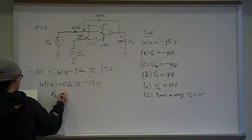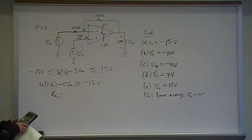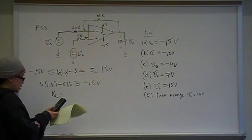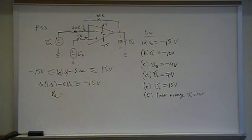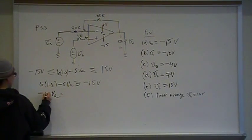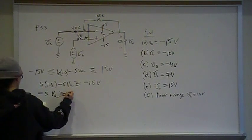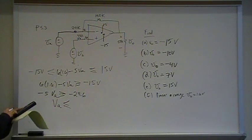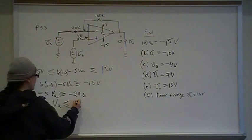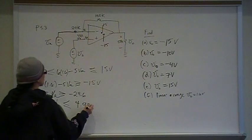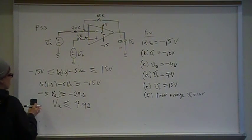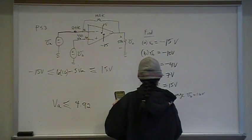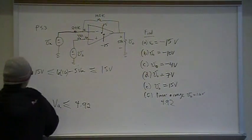Bringing that to the other side and solving for VA, that gives me negative 15 minus 6 times 1.6, which is negative 24.6 divided by negative 5, changes the arrow. So 24.6 divided by 5 is 4.92. VA needs to be less than 4.92, so that's the upper limit. We know 4.92 is one of the values from this inequality.